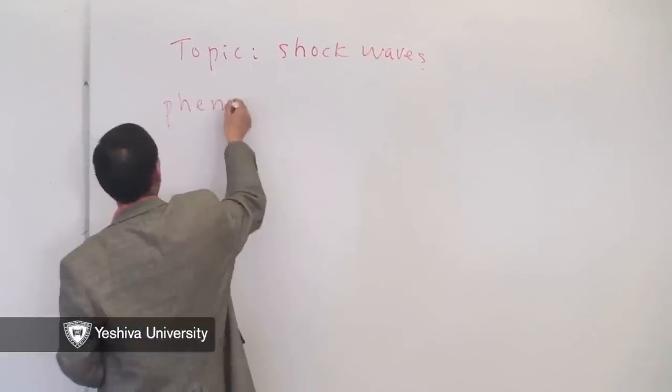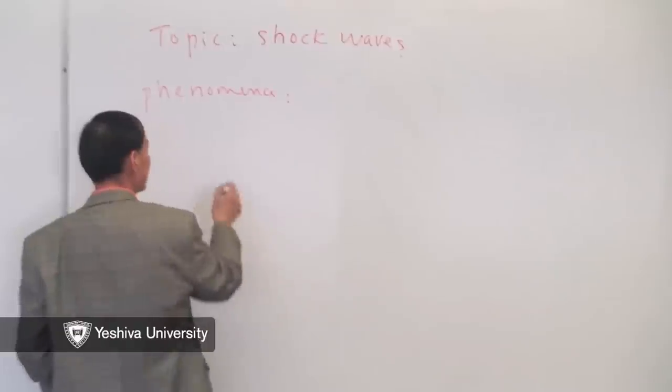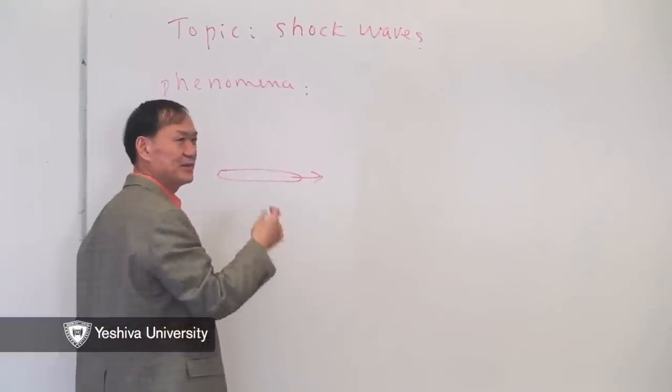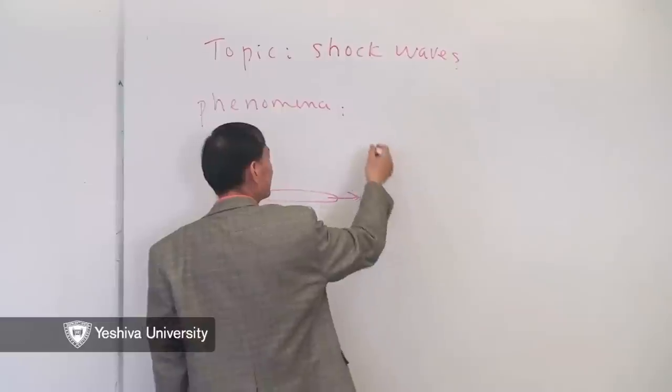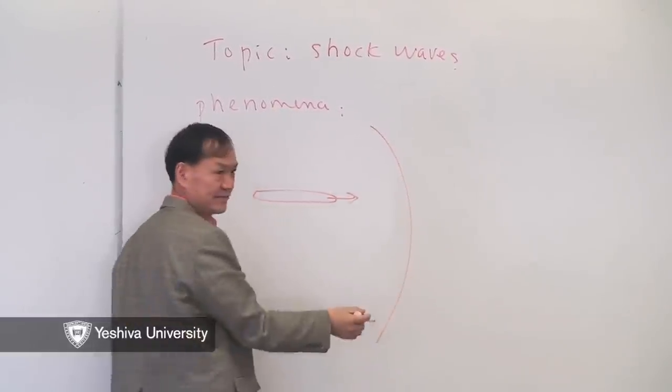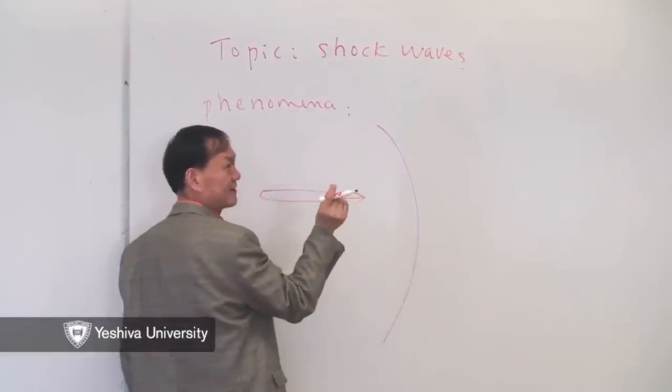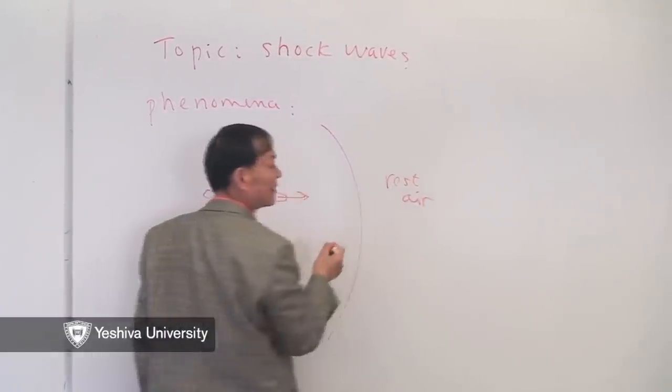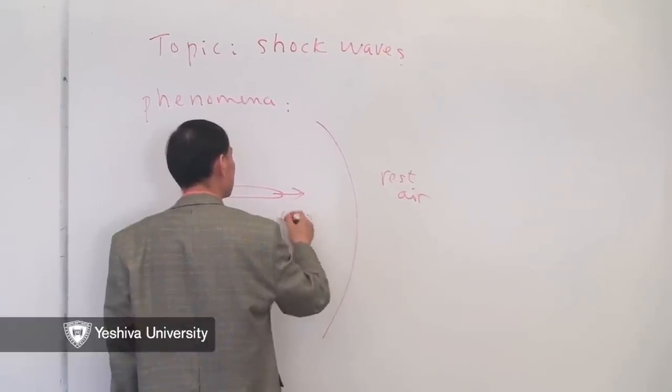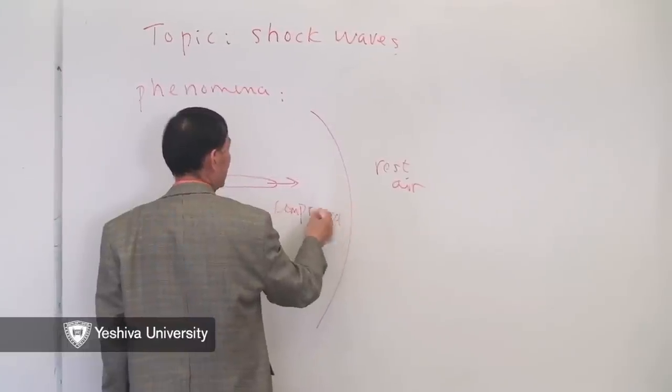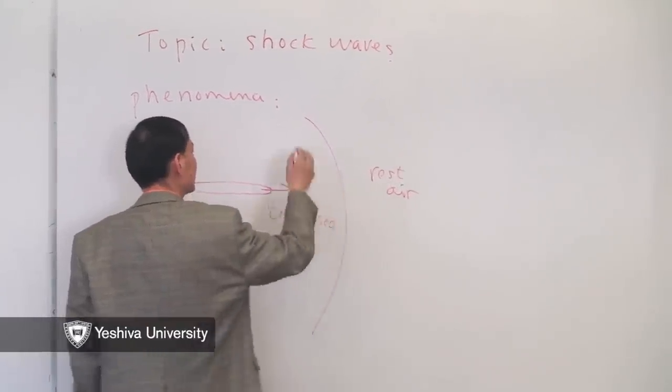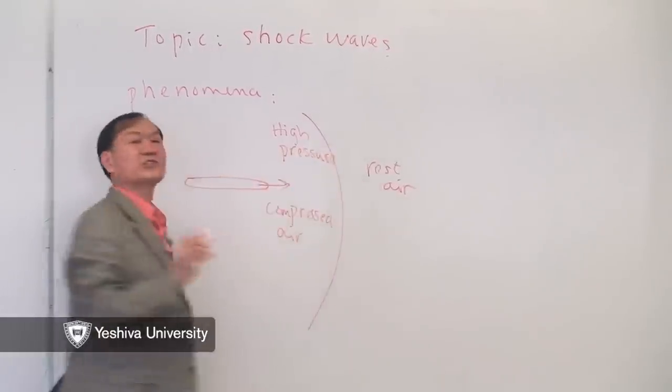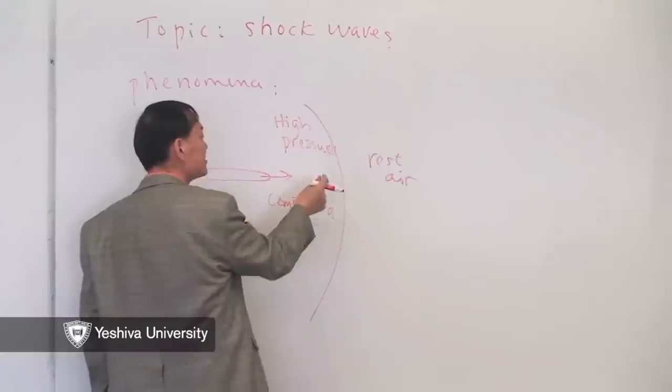So the phenomena is the following. If you get a missile that travels very fast, supersonic that is, then it goes faster than the speed of sound. Then, ahead of it, you see a surface. And this surface has zero width. Ahead of it, it's the unperturbed rest air. And behind it, this is compressed air. The pressure changes in zero width, like zero time.